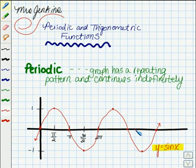If you look at the graph here, you can see how it has the same pattern that keeps repeating, and as you can also see by the graph and the arrows here, it does go on indefinitely. So this trig graph and trig function would be an example of a periodic function.